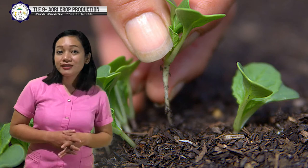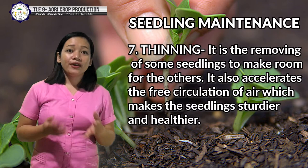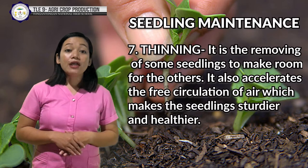And last but not least — thinning. Some crops possess small seeds that are difficult to broadcast in the field. They can be sown along a shallow drill and later on, excess seedlings can be pulled out, leaving the healthy seedlings about 5 cm apart. This is called thinning. Thinning also accelerates the free circulation of air, which makes the seedlings sturdier and healthier.